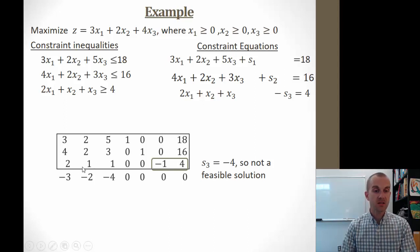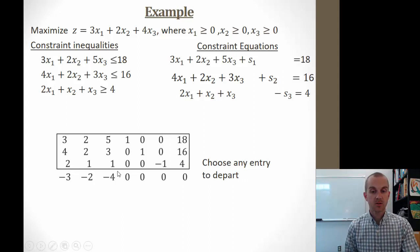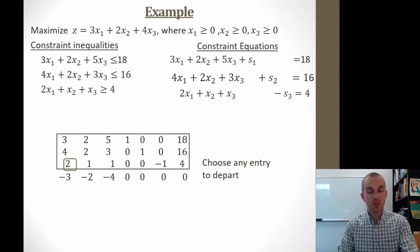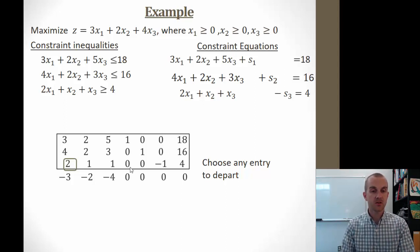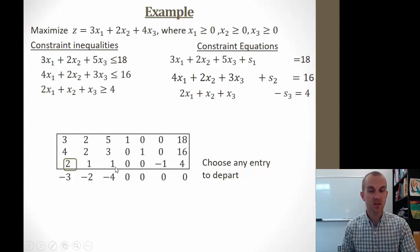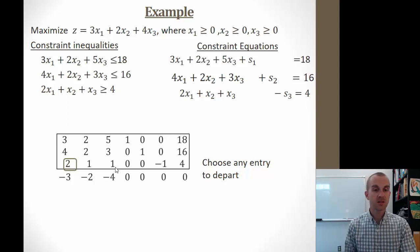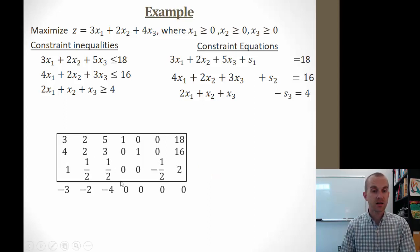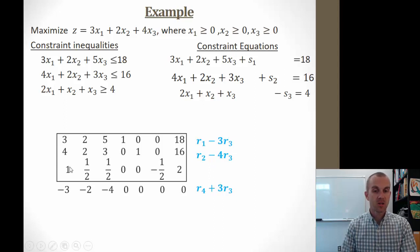We can choose any of the three entries in the surplus row as our departing entry. I'll choose the first entry — no particular reason, just trying it. Sometimes one entry simplifies more easily than others, so you can always try the other columns. First, I multiply that row by one half to turn the entry into 1. Then I multiply row 3 by 3 and subtract it from row 1, do row 2 minus 4 times row 3, and add 3 times row 3 to row 4.